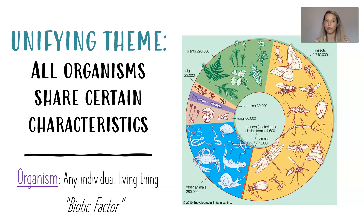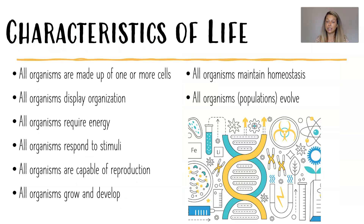You'll sometimes hear organisms called biotic factors. Organisms range from single-cell bacteria to single-cell amoebas to algae to fungi to plants and then to animals. Today we are looking at the characteristics which define something as being alive. All organisms are made up of one or more cells. All organisms display organization. All organisms require energy. All organisms respond to stimuli. All organisms are capable of reproduction. All organisms grow and develop. All organisms maintain homeostasis. And finally, all organisms — or really, populations — evolve.